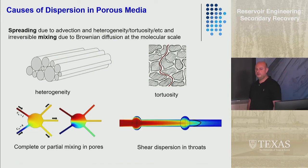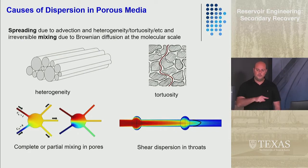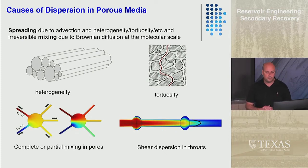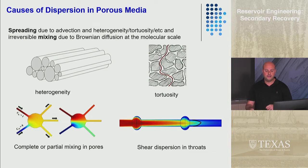Even in throats you can have some dispersion because of the velocity profiles. You learned about parabolic velocity profiles — a particle in the center of the tube moves faster than one at the edges.